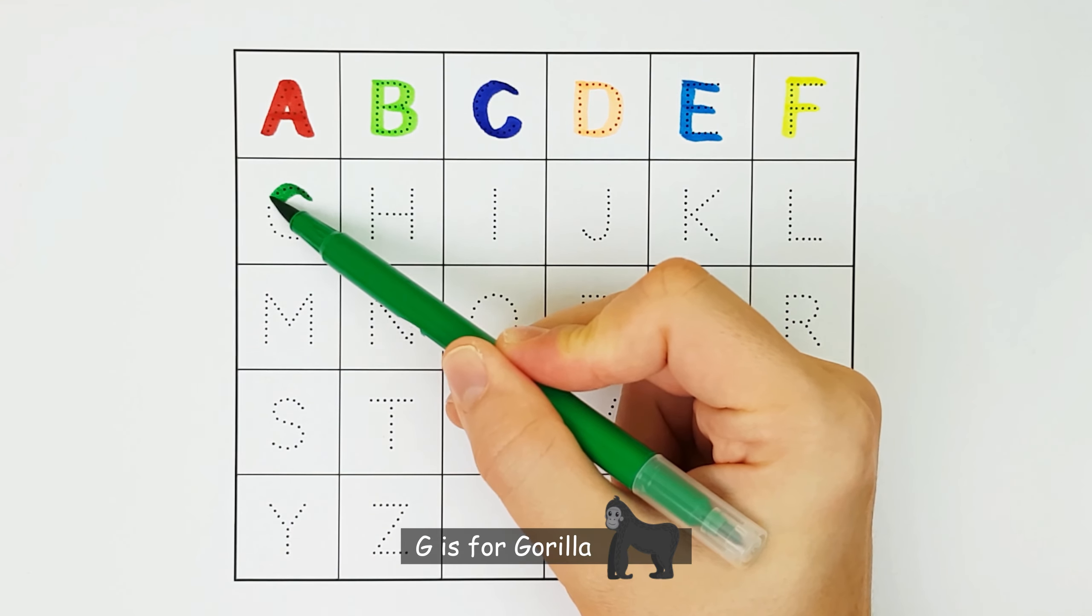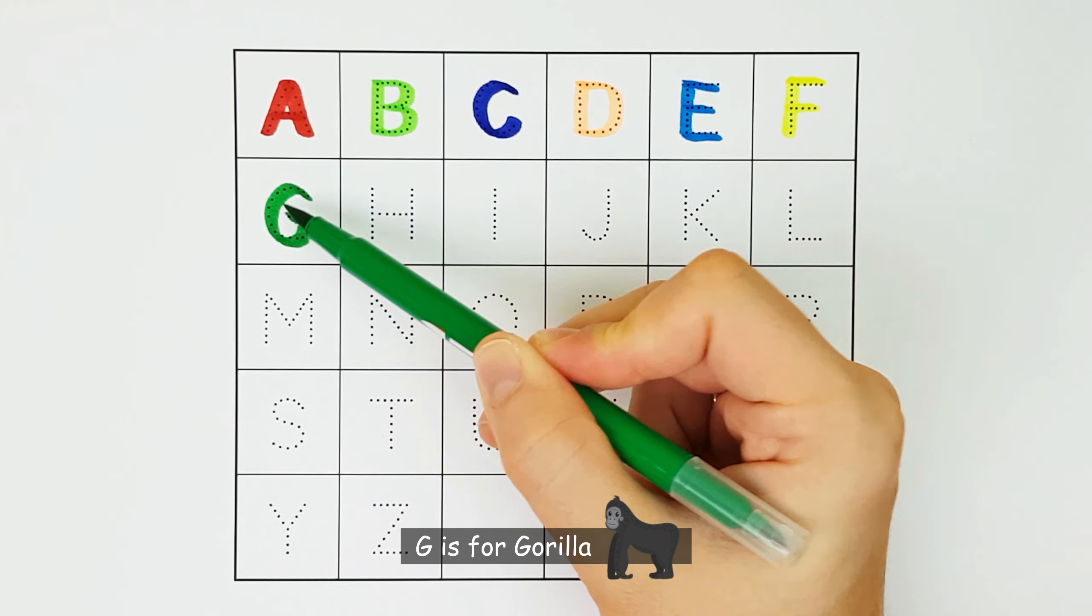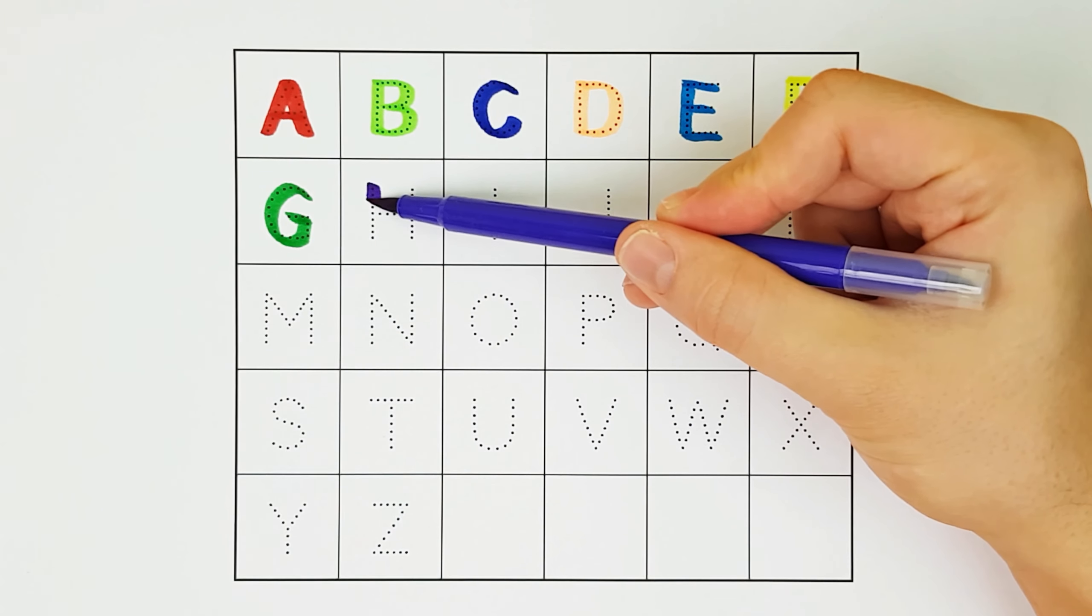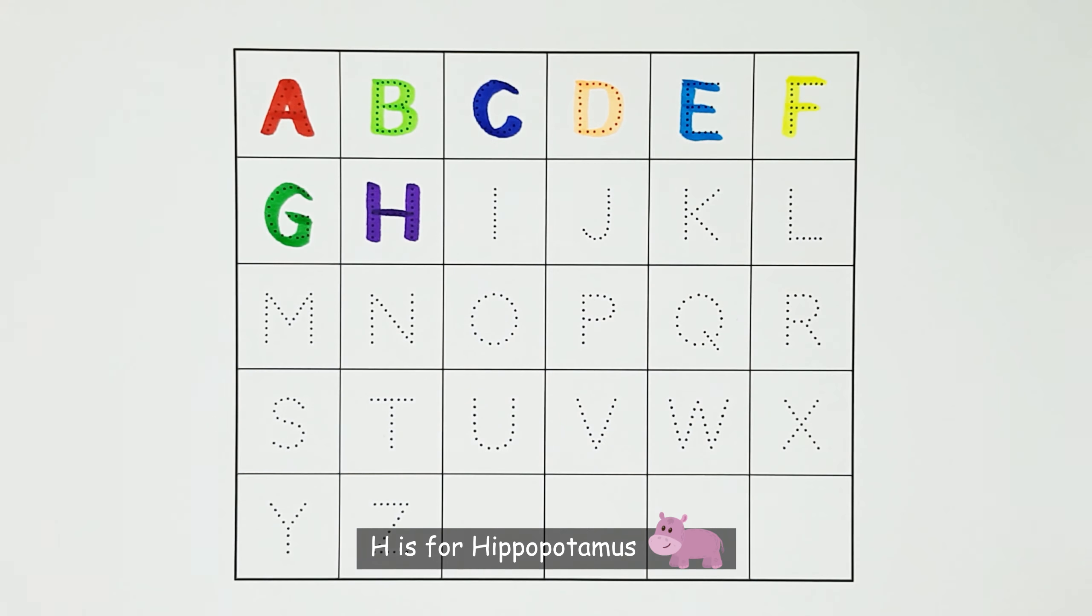G. G is for gorilla. G. H. H is for hippopotamus. H.